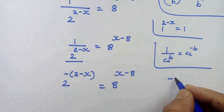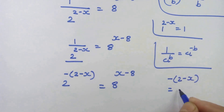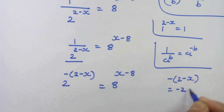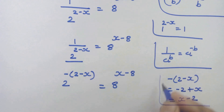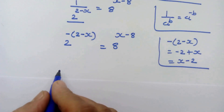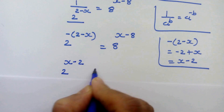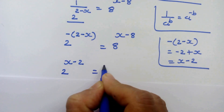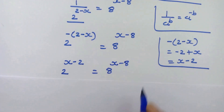Now, minus 2 into 2 minus x is equal to minus 2 plus x, and we can also write this as x minus 2. So here we can write 2 raised to x minus 2 is equal to 8 raised to x minus 8.